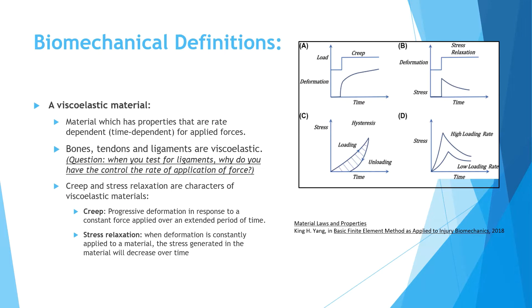Viscoelastic material has two important concepts: creep and stress relaxation. Creep means that progressive deformation will occur when a constant force is applied over a period of time. In the curve, at a given point in time, a constant load is applied resulting in deformation, and then over time the load does not increase — it remains constant — but the deformation increases with time. This is creep.